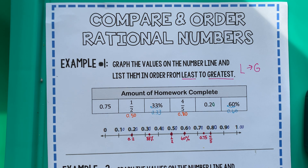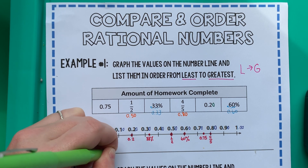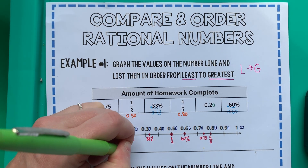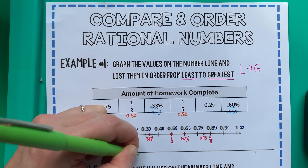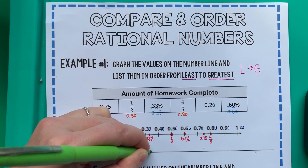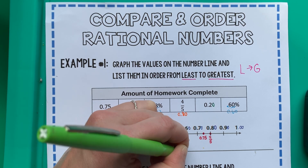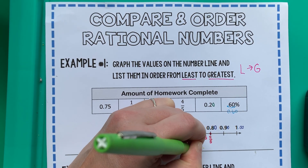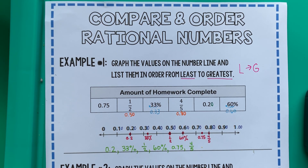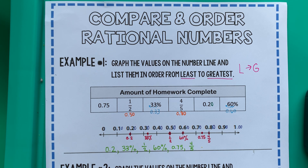Now we just have to write them out on the line. Least is on the left, so we start from the left and work our way to the right. Our first number was 0.2, then 33%, then 1/2, then 60%, then 0.75, and our biggest number was 4/5. We're done with example one. On your assignment today, remember — you want them all to look like money. We know money in order, so if you can get them all to look like money, you'll do just fine.